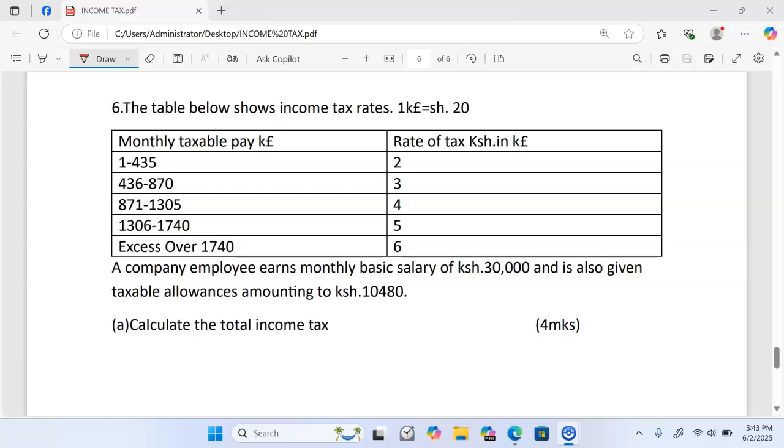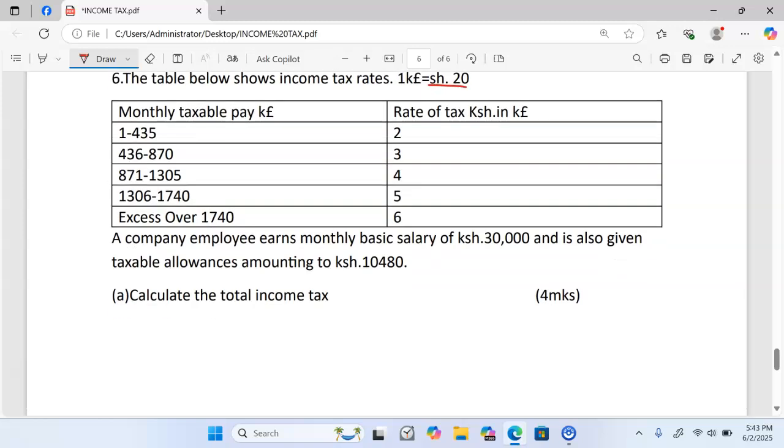The question reads: the table below shows income tax rates where one Kenyan pound is equivalent to 20 shillings. We have the table monthly taxable pay in Kenyan pounds, rate of tax in shillings per pound. The company employee earns a monthly basic salary of $30,000 and also given taxable allowances amounting to $10,480.